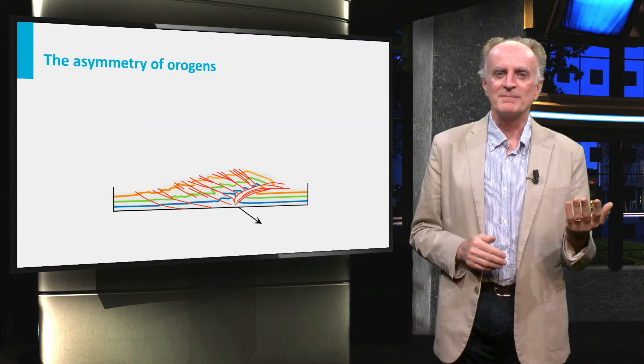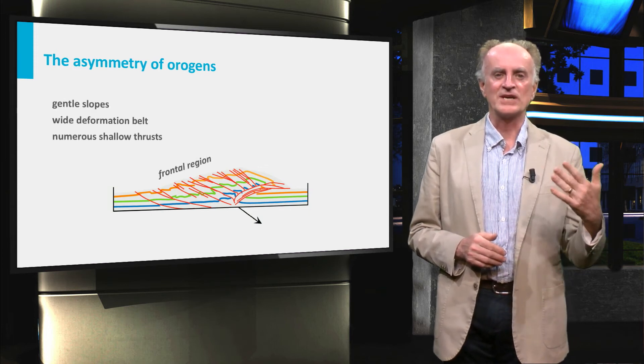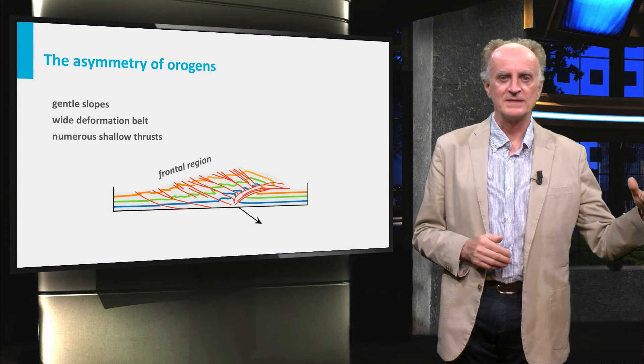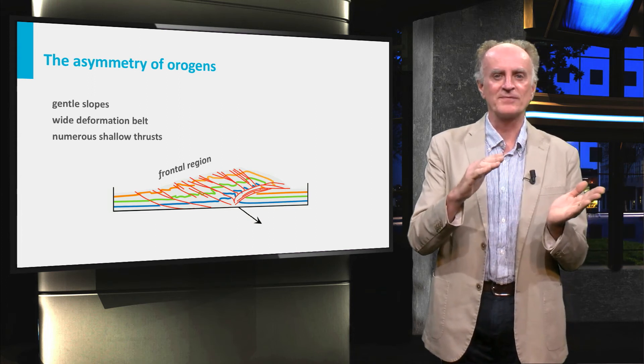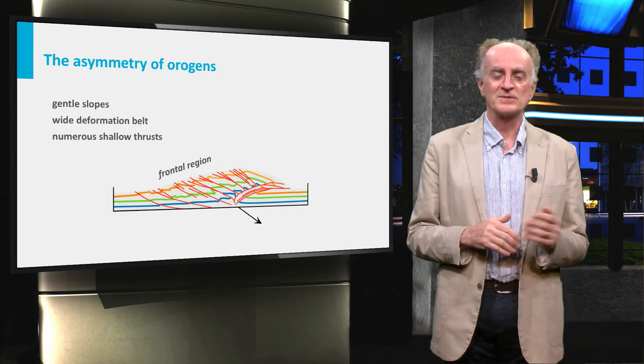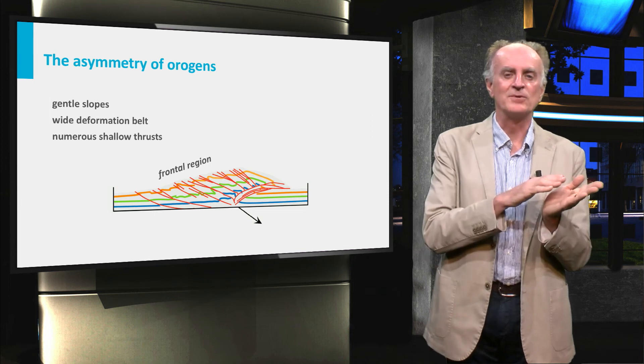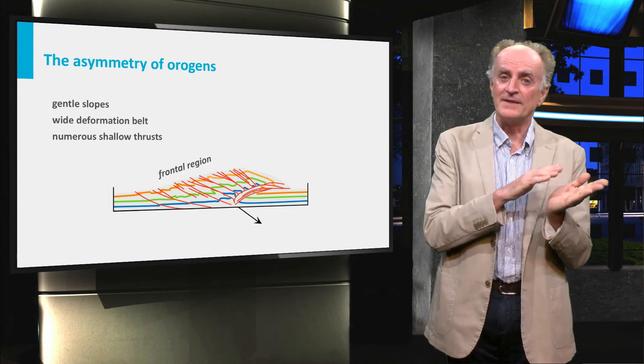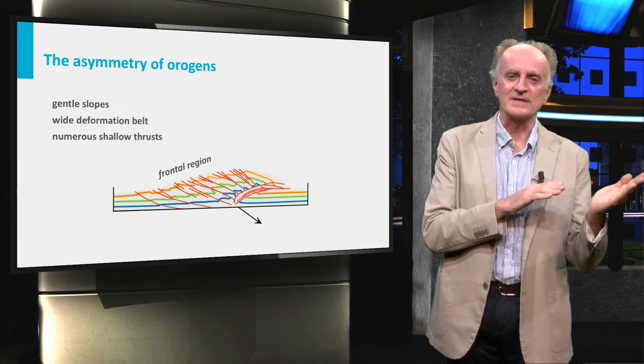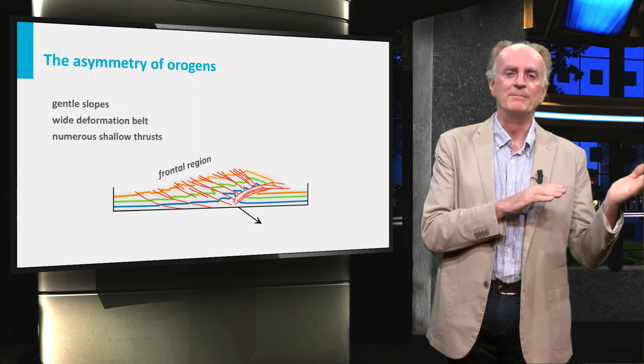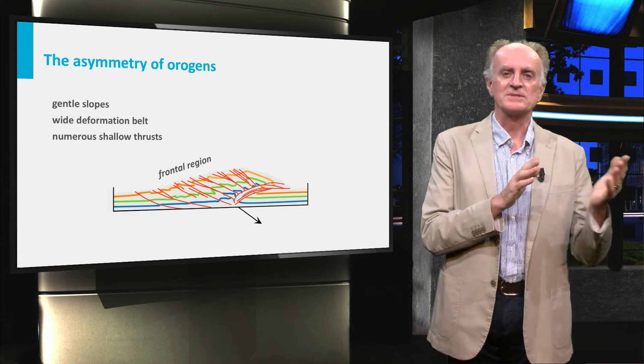The two sides we mentioned of the mountain belt are very different. The frontal part is generally wide with gentle slopes. The deformation is spread over a large number of shallow dipping thrusts, functioning as the fold and thrust belts we have seen at an earlier stage. Each thrust accommodates only a limited amount of deformation and then stops and its ongoing shortening is accommodated by a new thrust, typically developing in a more external position. As a result the orogen becomes wider.